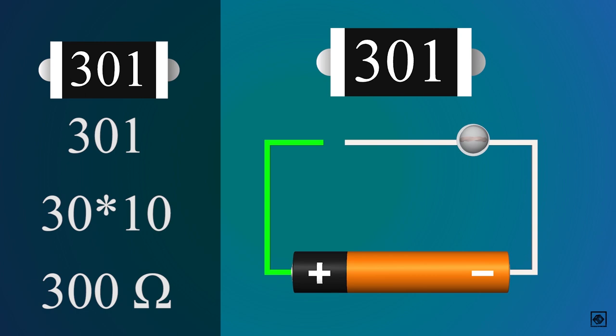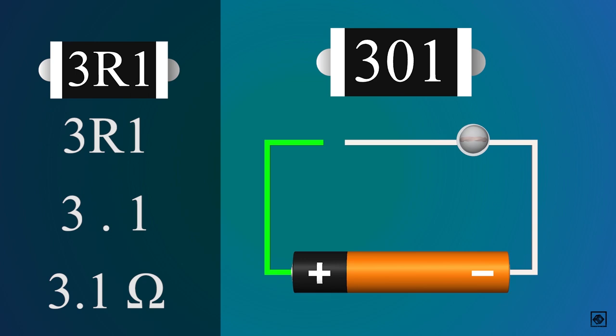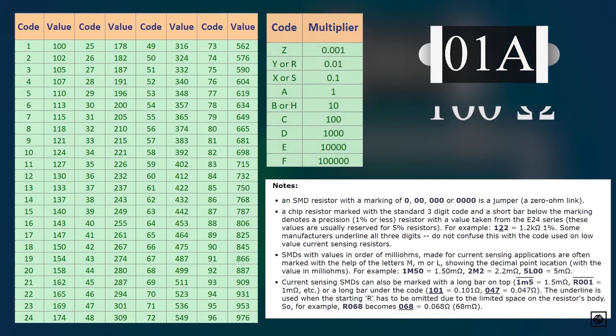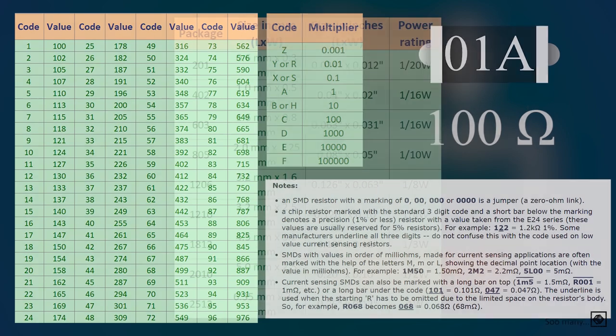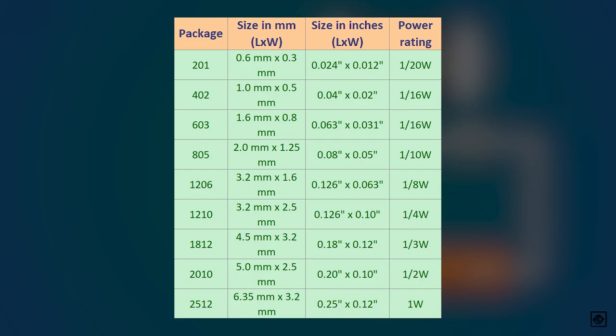In SMD resistors, if there are numbers only, then the initial digits are the numbers and the last digit is the multiplier. Or if you see an R in the beginning or between numbers, then convert it to the decimal point and you have its value. Or if you see anything different, then refer to this table and the notes. Their wattage is also determined by their size.